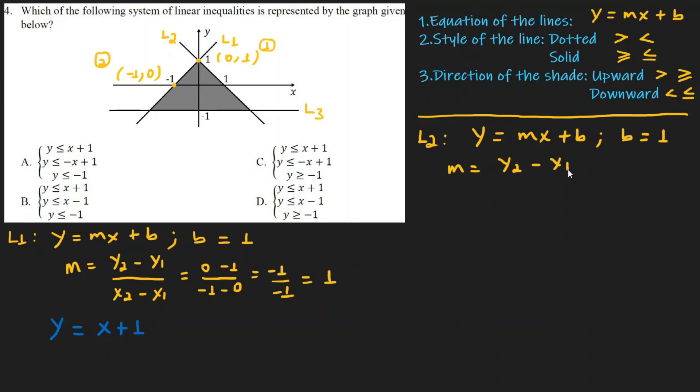For Line 2, choose two points. First point: x is 0, y is 1. Second point: x is 1, y is 0. So y2 minus y1 is 0 minus 1, which is minus 1. x2 minus x1 is 1 minus 0, which equals 1. So the slope is minus 1 over 1, which equals minus 1. Therefore, Line 2 equation is y equals minus x plus 1.